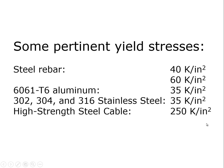Here are the pertinent yield stresses for the materials we want to look at. Steel rebar is a very common form of tensile steel — it's intended purely for its tensile capacity in reinforcing concrete. 6061-T6 aluminum bar or round rod can be used as a tensile member; the yield stress is 35 kips per square inch. Among the common types of stainless steel in architectural applications are 302, 304, and 316.